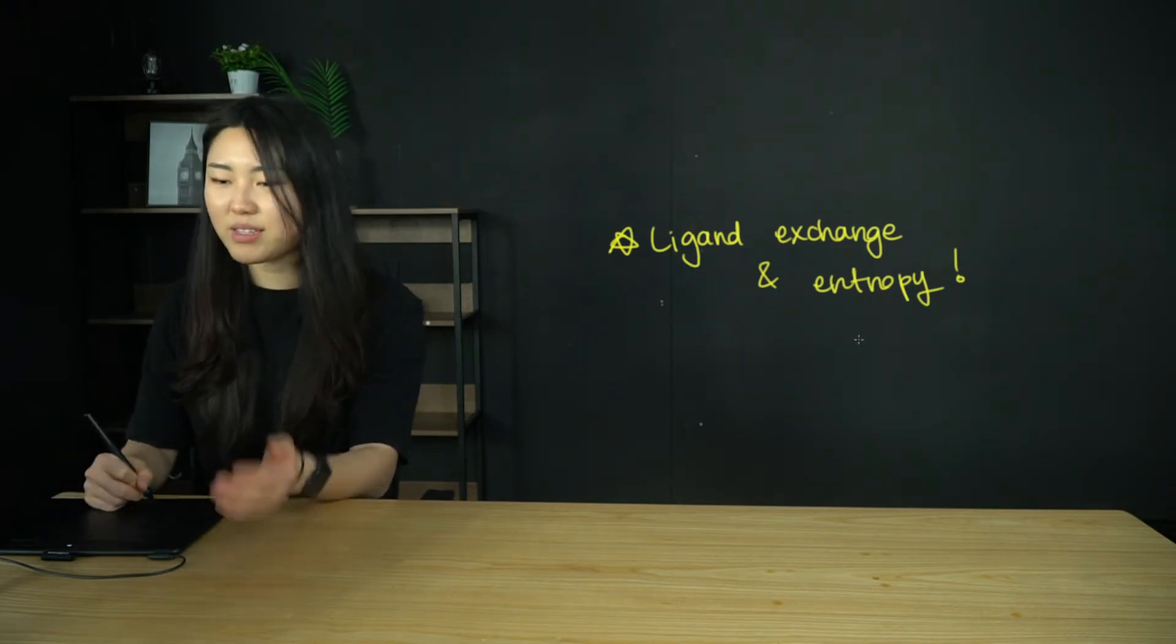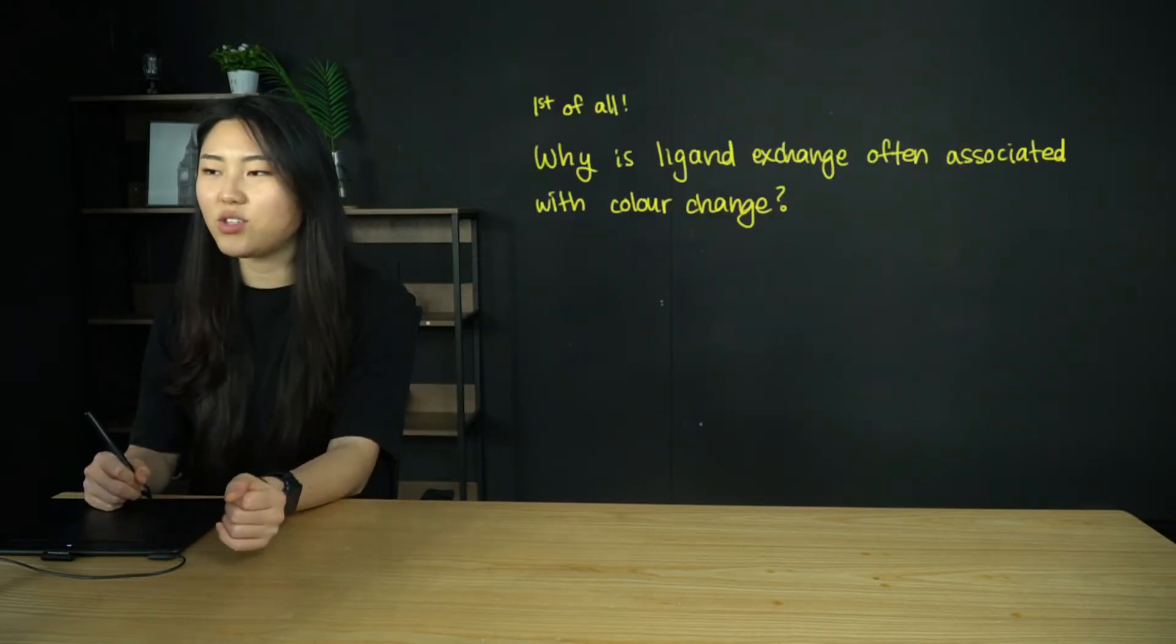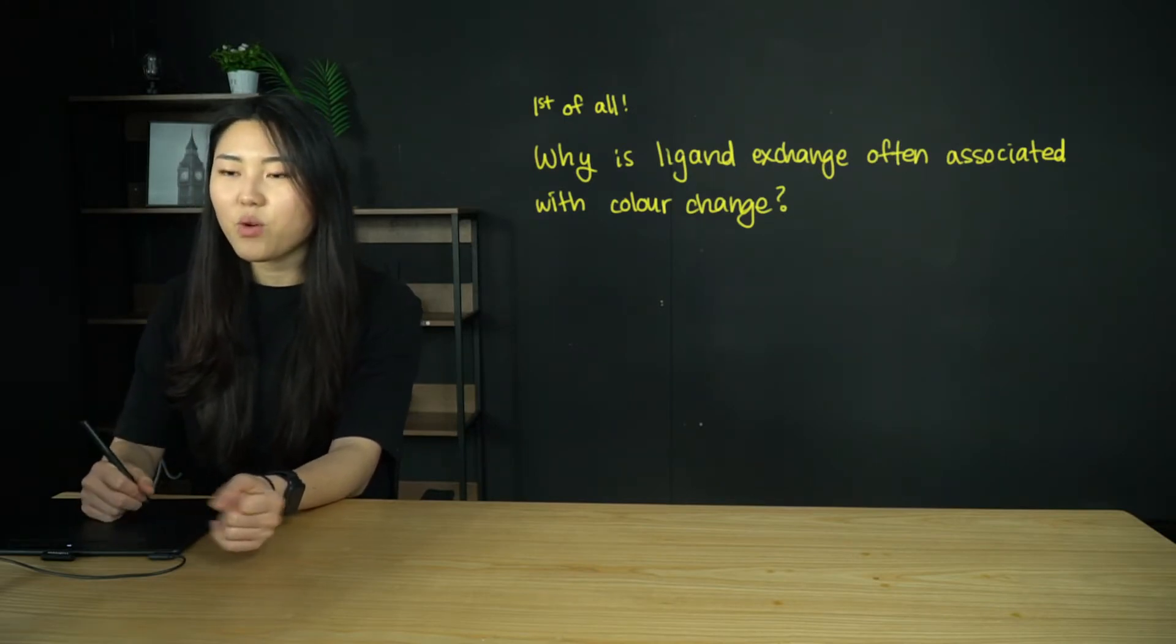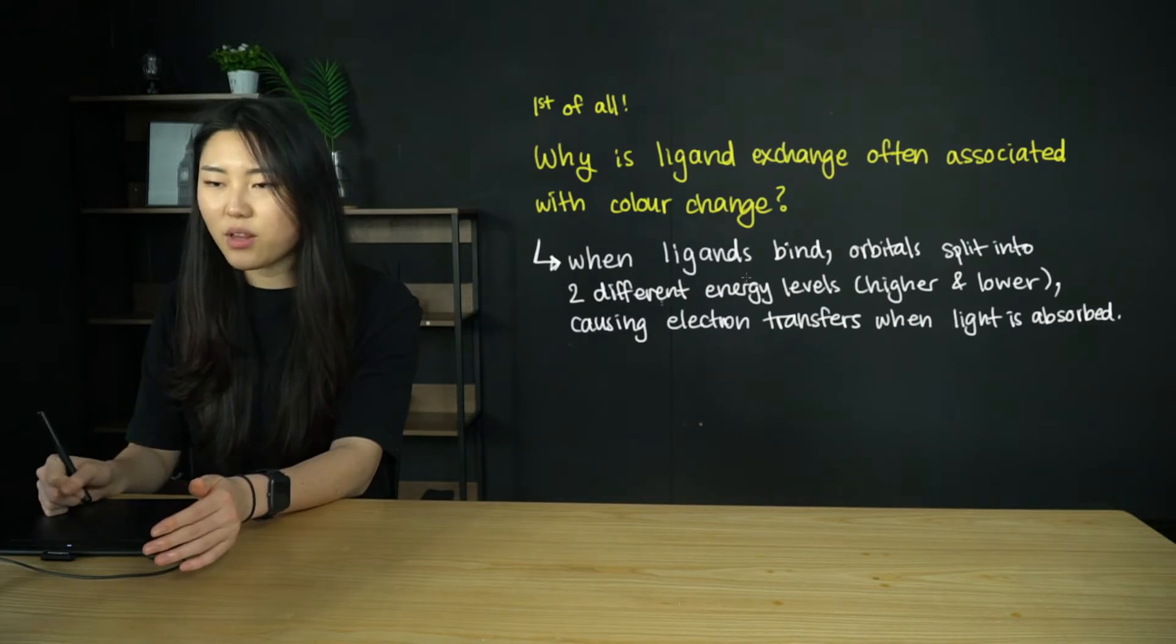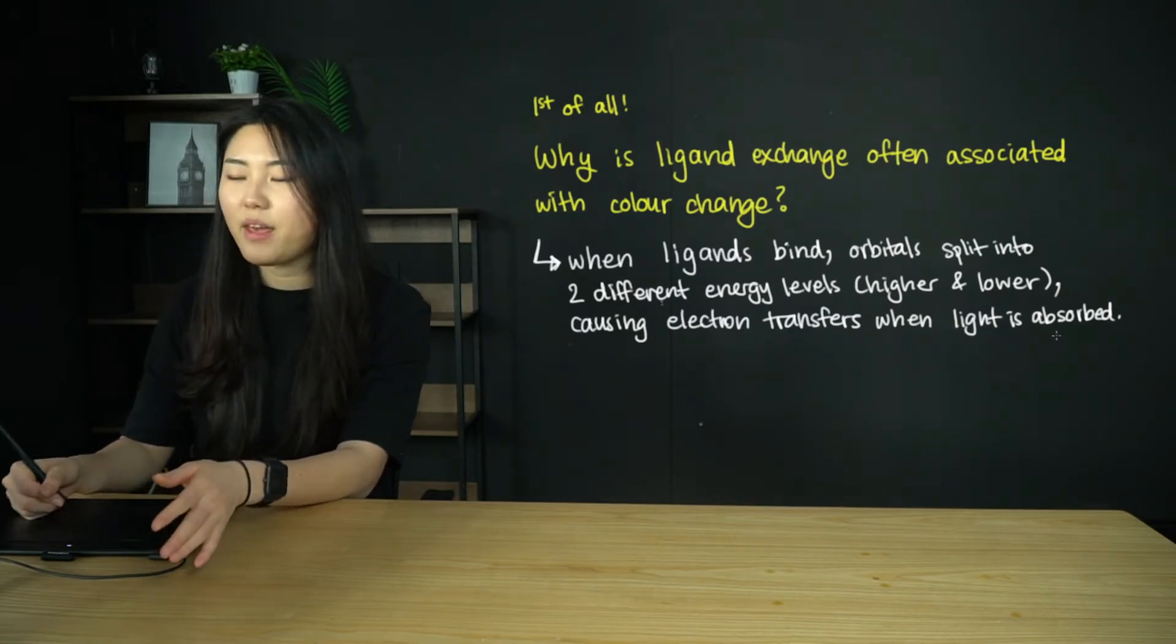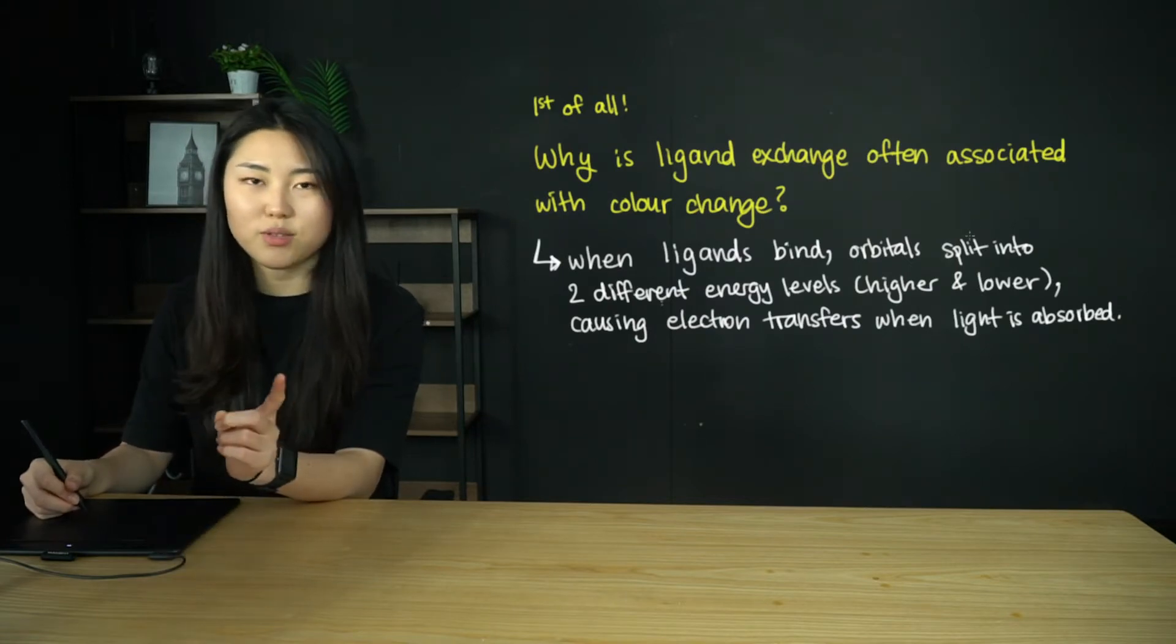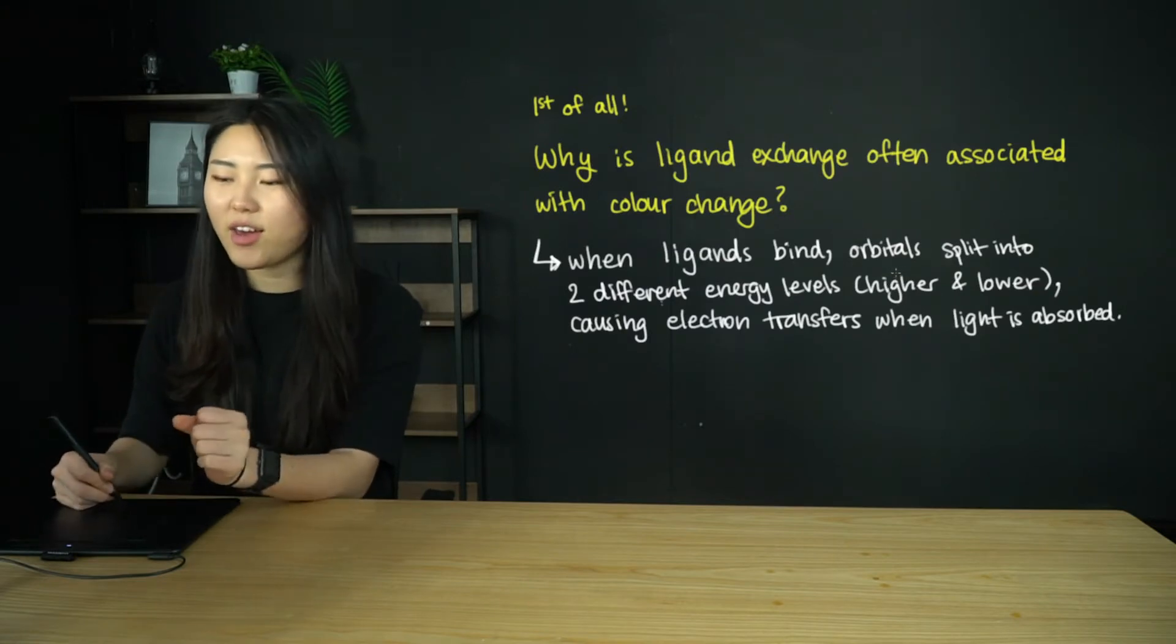First of all, why is ligand exchange often associated with color change? When ligands bind, orbitals split into two different energy levels, higher and lower, causing electron transfers when light is absorbed, and then you see the complementary colors. If you don't remember this, please go to part one of transition metal chemistry, around the end of the video.